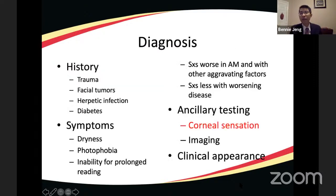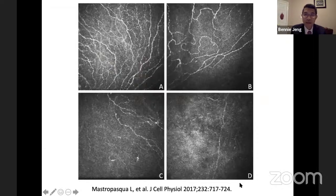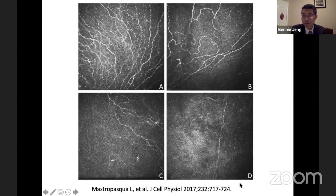Diagnosis involves asking about risk factors including trauma, facial tumors, herpetic infection, and diabetes. Patients are often previously diagnosed with dry eye. As the disease progresses and sensation is lost, symptoms can actually improve. Ancillary testing for corneal sensation is the hallmark of diagnosis. Confocal microscopy can image the sub-basal nerve plexus — showing loss of nerves from stage one through stage three neurotrophic keratopathy.